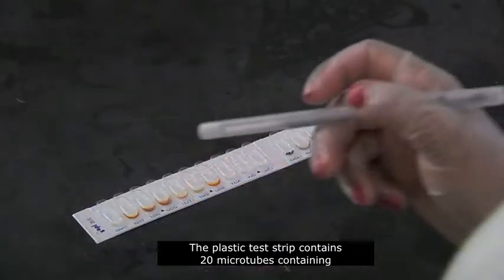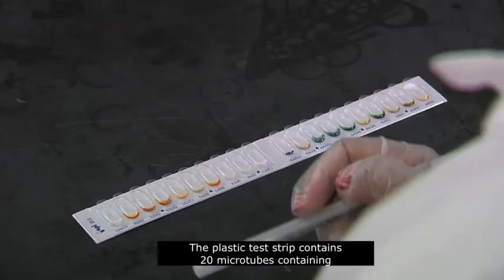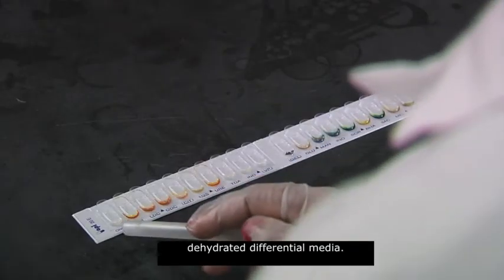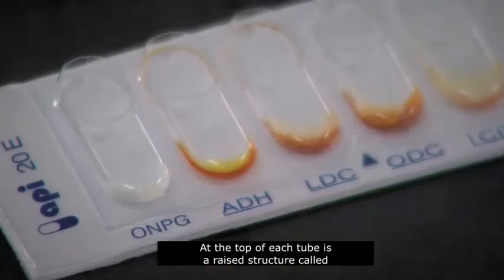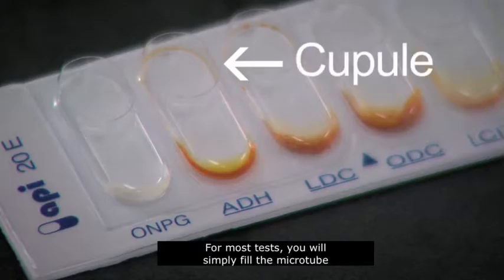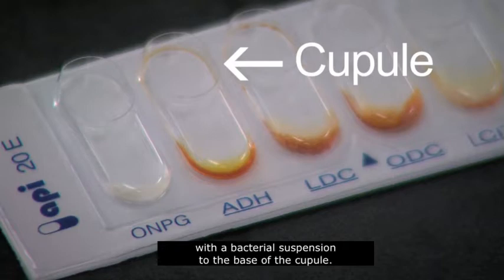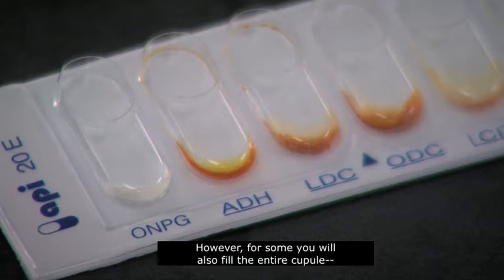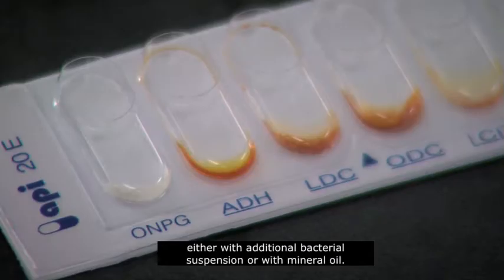The plastic test strip contains 20 microtubes containing dehydrated differential media. At the top of each tube is a raised structure called a cupule. For most tests, you will simply fill the microtube with a bacterial suspension to the base of the cupule. However, for some, you will also fill the entire cupule, either with additional bacterial suspension or with mineral oil.